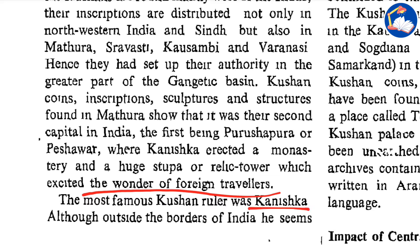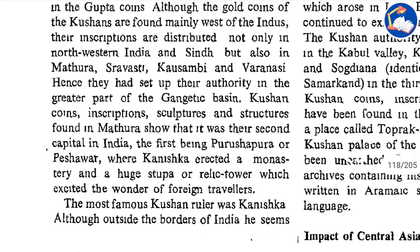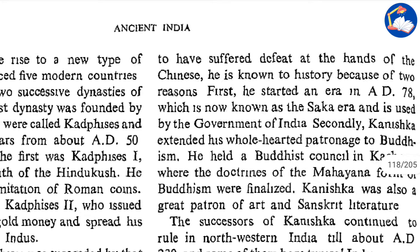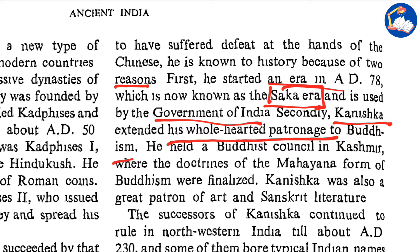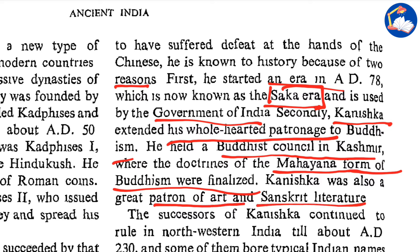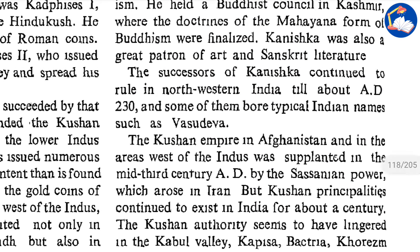The first Kushan capital being Purushapura or Peshawar, where Kanishka erected a monastery and a huge stupa or relic tower which excited the wonder of foreign travelers. The most famous Kushan ruler was Kanishka. Although outside the borders of India he seems to have suffered defeat at the hands of the Chinese, he is known to history for two reasons: first, he started an era in 78 AD that is now known as the Saka era; and second, Kanishka extended his wholehearted patronage to Buddhism. He held a Buddhist council in Kashmir where the doctrines of the Mahayana form of Buddhism were finalized. Kanishka was also a great patron of art and Sanskrit literature.